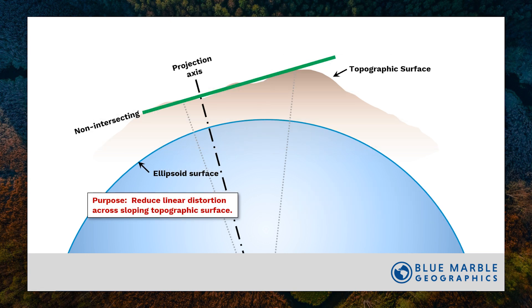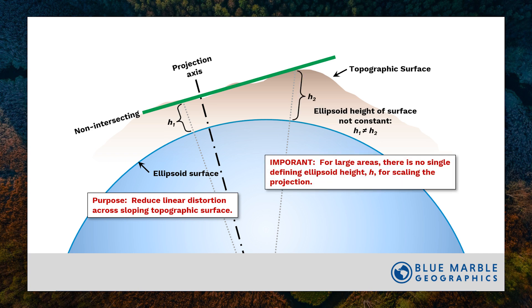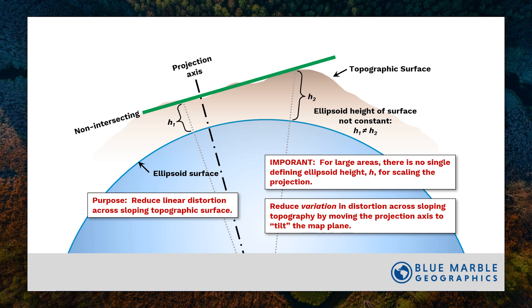We can also deal with a slope in the topographic surface, and we can do that by tilting the mapping plane. When we do that, there's not going to be a single ellipsoidal height that we can use to scale a map projection. So we can shift the projection axis away from the center of the area of interest off to one side, and that provides a tilt of the mapping plane.